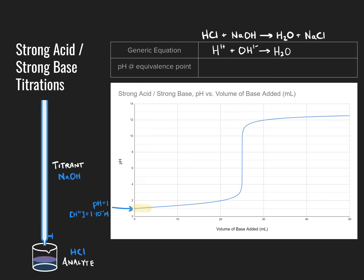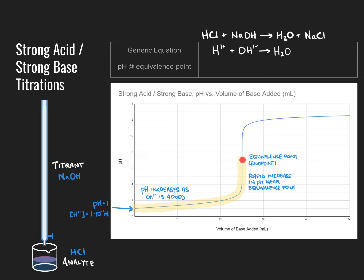As we add more and more hydroxide ion, the pH goes up and up, and then just past 20 milliliters of base added, the pH starts to skyrocket, approaching what we call the equivalence point or endpoint of the titration. For those spending time in calculus, the graph is concave up before 25 milliliters and concave down after, implying an inflection point at pH 7 — where the moles of acid equal the moles of base added.